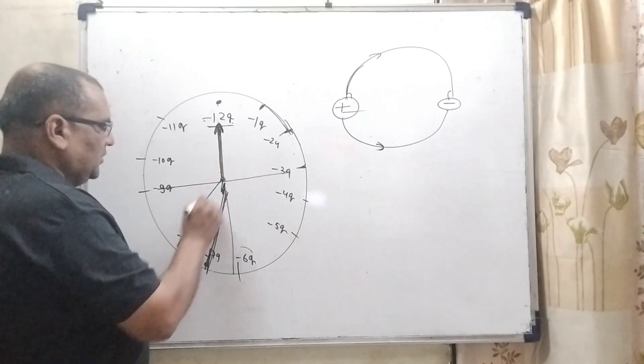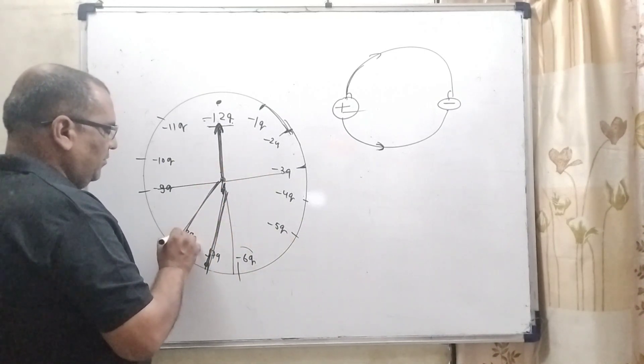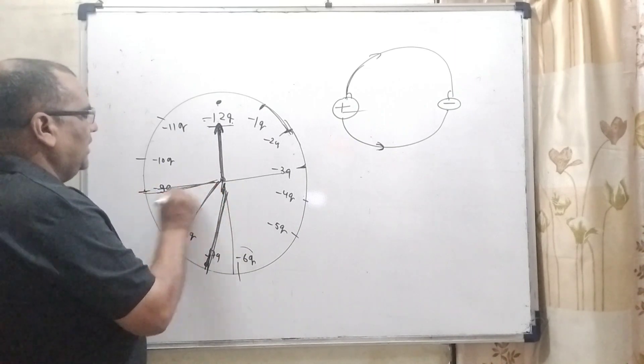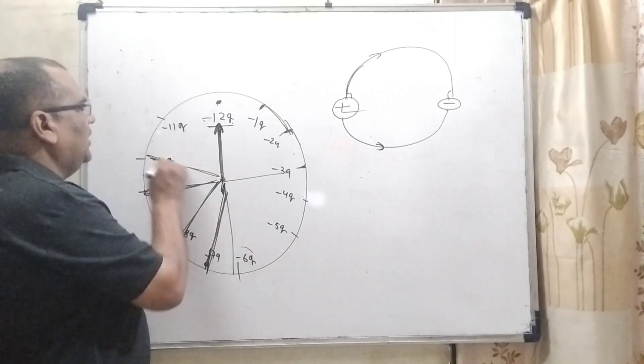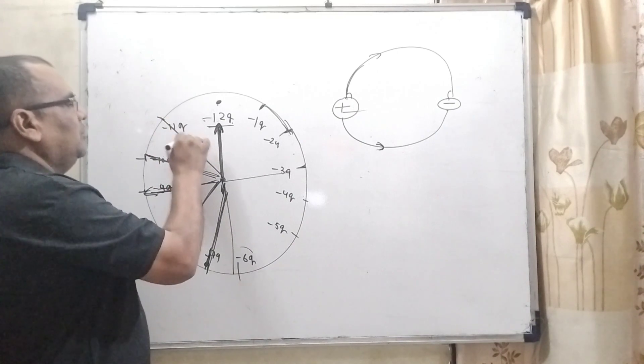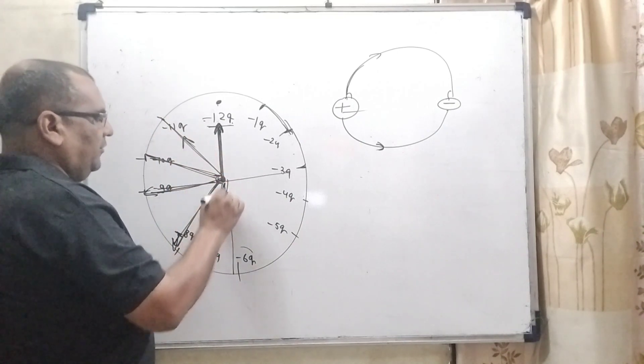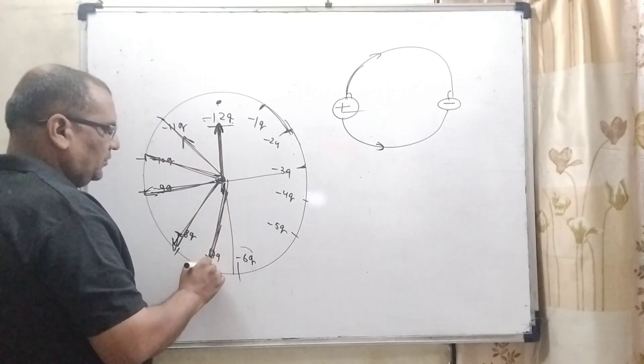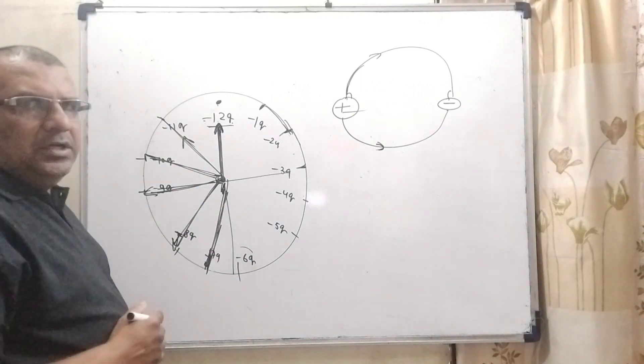Similarly, this force's direction minus 8Q, minus 9Q, minus 10Q, minus 11Q. So net electric field towards the low potential.